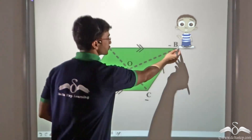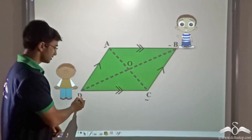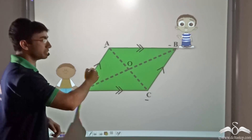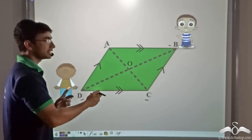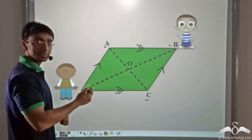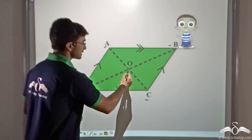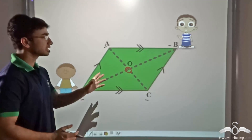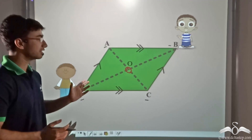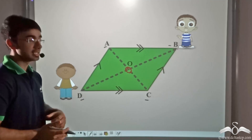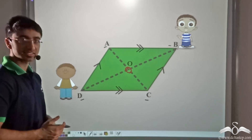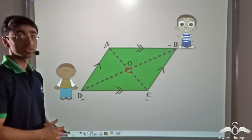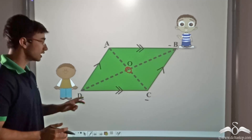Jack starts from B and Ryan starts from D, and they run along BD. When they are running along BD they will meet at a point — let us say they meet at point O. Now both of them are arguing that they have covered a greater distance. Jack says he has covered a greater distance along BO, whereas Ryan says no, he has covered a greater distance along DO.